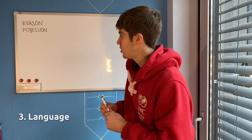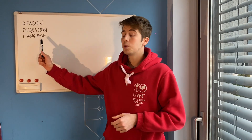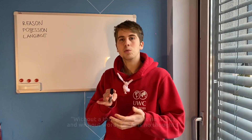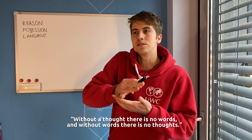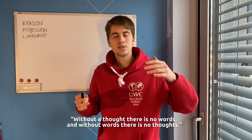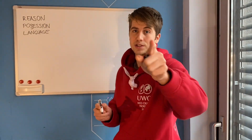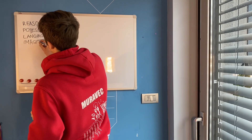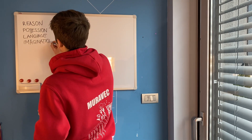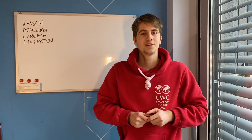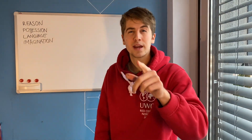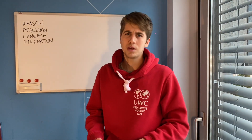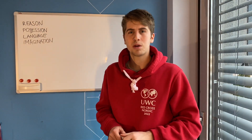Darwin also mentions language. He says that with evolved language, human thinking and reasoning also evolved — without a thought there are no words, and without words there are no thoughts. Next, he mentions imagination. Imagination is very great in the human species; we can imagine abstract things. Interestingly, dogs and cats dream, which suggests they also probably have imagination.